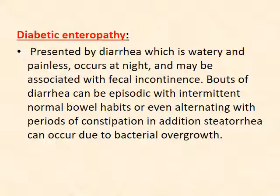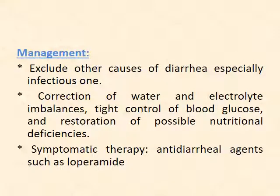Diabetic enteropathy presents mainly as diarrhea, which is watery and nocturnal, and may be associated with fecal incontinence. It may occur with intermittent normal bowel habits or alternate with constipation. Diarrhea can also occur due to bacterial overgrowth. Treatment involves excluding infectious causes, correcting water and electrolyte imbalance, controlling blood sugar, replacing nutritional deficiencies, and using symptomatic anti-diarrheal agents such as loperamide.